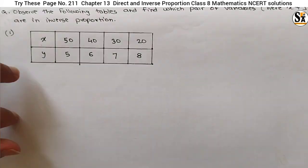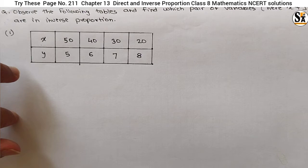Here we can correlate the data given in the table as the speed of a vehicle and the time required by the vehicle to cover a specific distance. If we consider x as the speed of the vehicle and y as the time required to cover a specific distance, we can see that as speed decreases, time required increases. But we have to find whether these two variables — speed and time — are in inverse proportion.